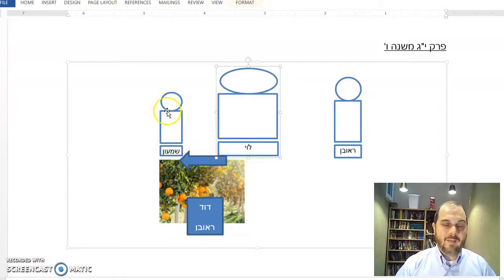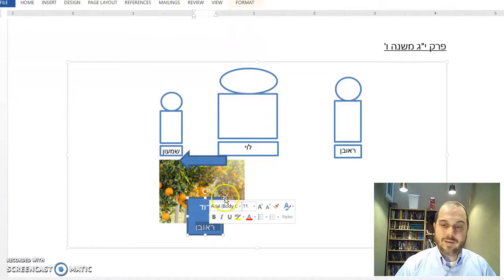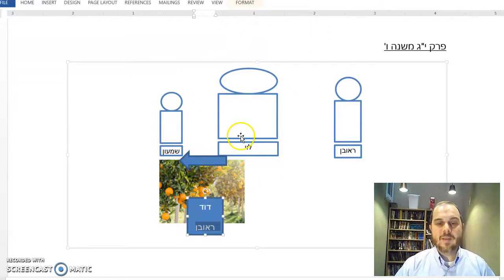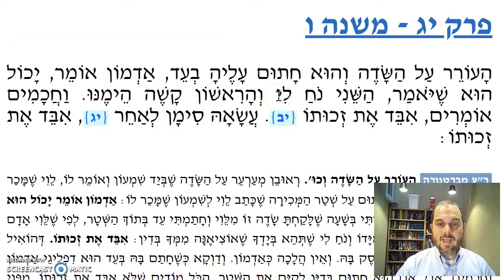Therefore, when Levi wanted to sell the field to you, I'm really glad, because I was never going to get the field from him. I'd rather get the field from you. So I signed on the shtar not because I admitted it belonged to Levi, but because I wanted you to have it so I could get it from you. Ha'sheni noach li - the second guy is preferable. Ha'rishon kashah himenu - the first guy is harder.